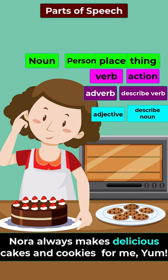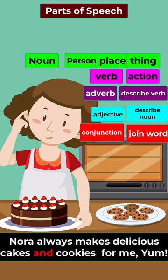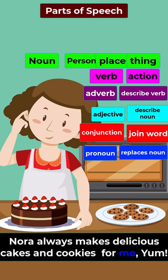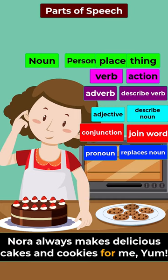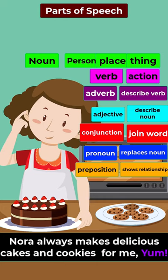And is a conjunction, which joins words or phrases — here it joins cakes with cookies. Me is a pronoun, which replaces a noun in a sentence; me replaces the noun I here. For is a preposition, which shows a relationship — here it shows the relationship between Nora and me. Interjection expresses emotion, and yum is the interjection here.